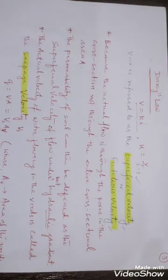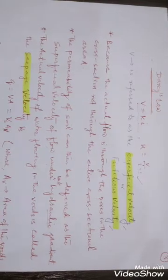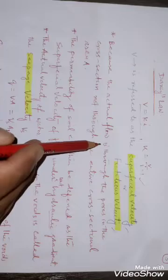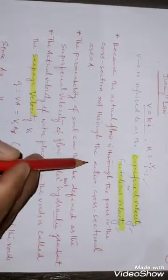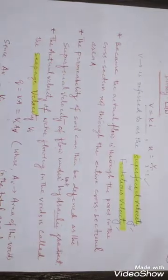Why it is fictitious velocity or superficial velocity? Because the actual flow is through the pores in the cross section, not through the entire cross sectional area.